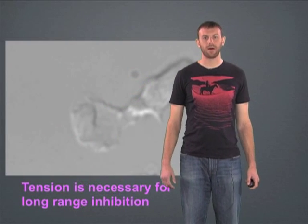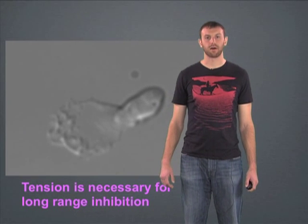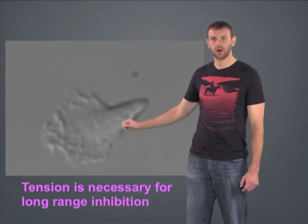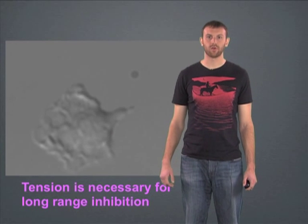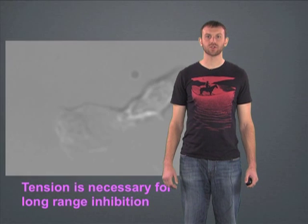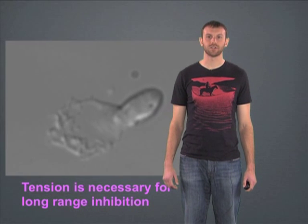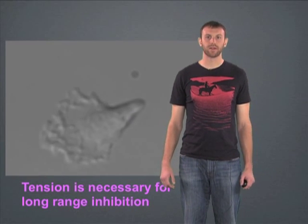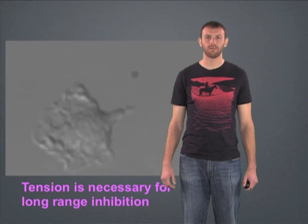Consistent with our hypothesis, reducing tension with hypertonic buffer immediately causes uniform protrusion and uniform leading-edge signals. This demonstrates that membrane tension is essential to confine signals to the leading edge, meaning that membrane tension is a dominant component of the long-range inhibitor.